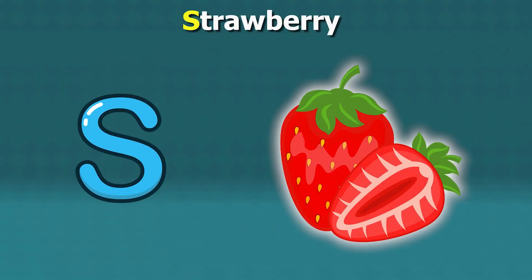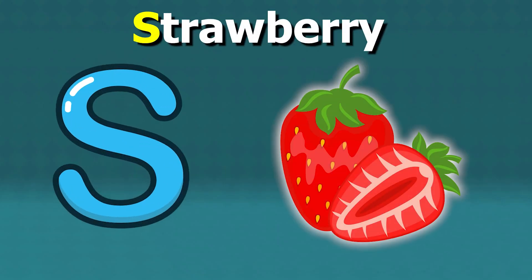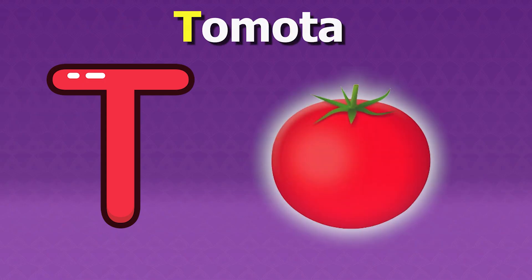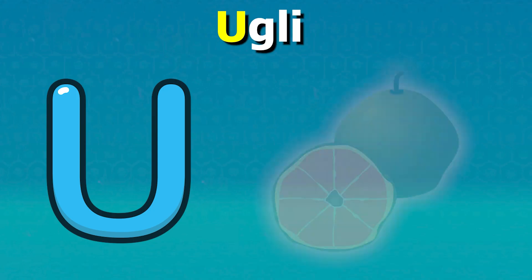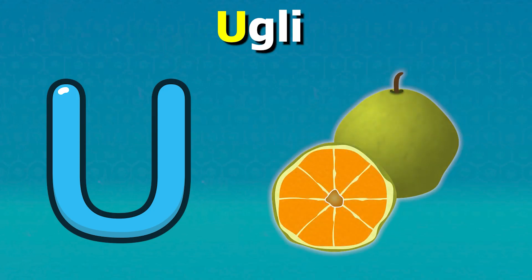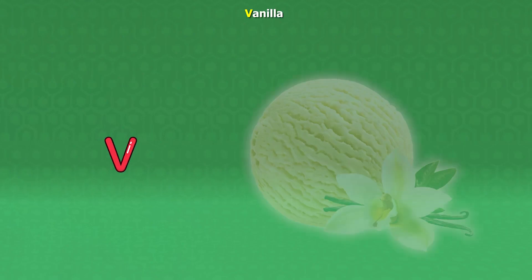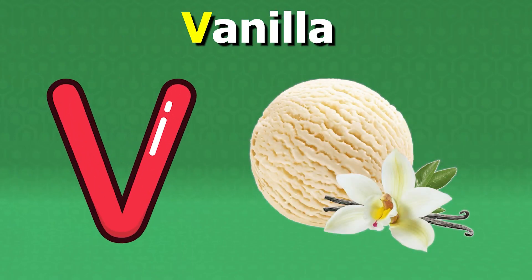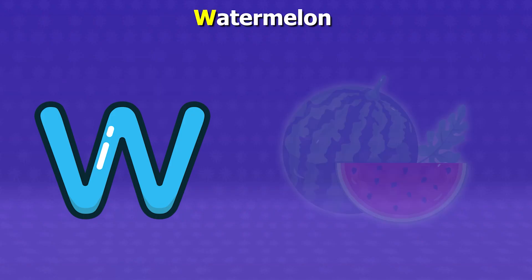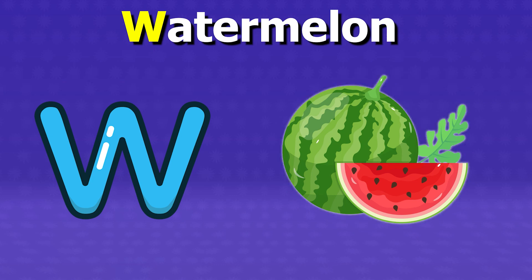S for strawberries, T for tomato, U for ugly fruit, V for vanilla, W for watermelon.